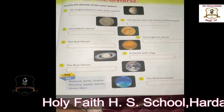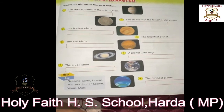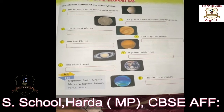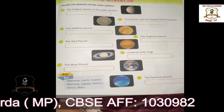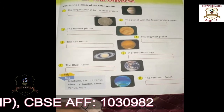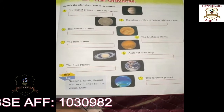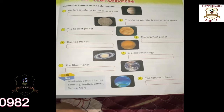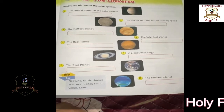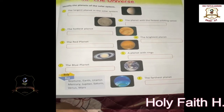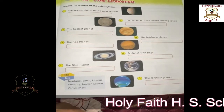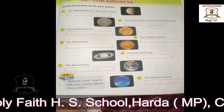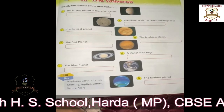Repeat after me. There are 8 planets in our solar system. They are Mercury, Venus, Earth, Mars, Jupiter, Saturn, Uranus and Neptune.